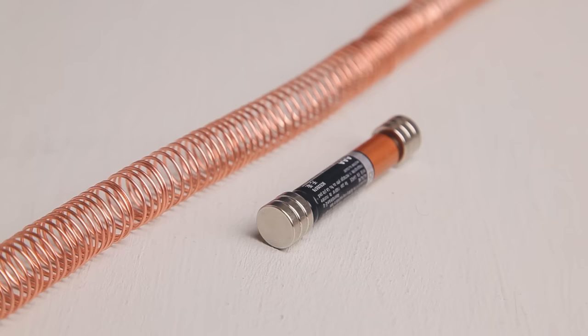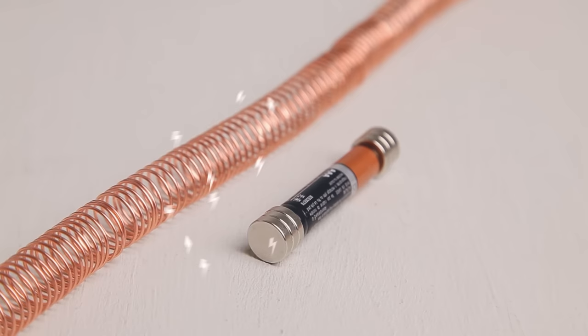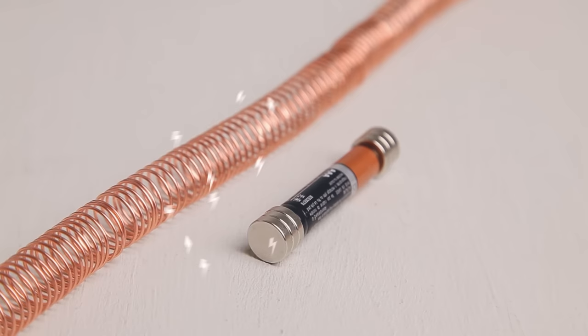Electricity goes from the positive end of your battery, through your magnets, into the copper wire, and spirals back to the negative terminal of the battery. The electricity going through the copper wire actually creates a magnetic field which pushes against your magnets and pushes your train forward.